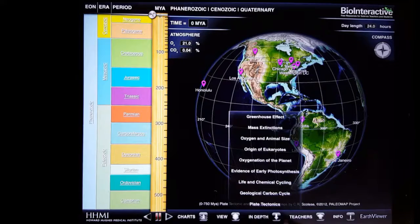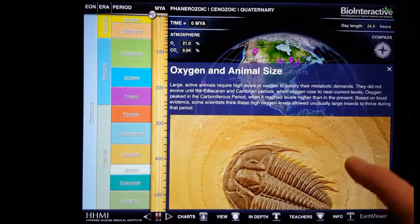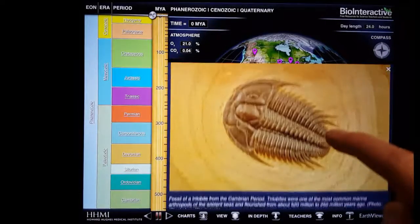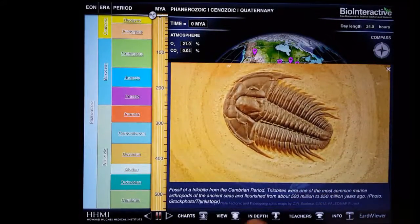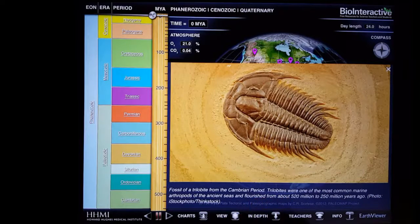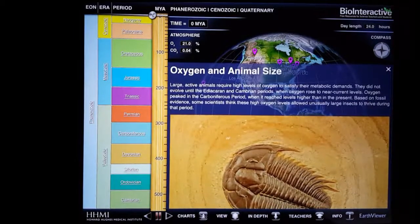The In Depth button provides more information about specific topics. Selecting an item here will open a small window with images and descriptions related to the subject. Once finished, you can hit the X to close the window.